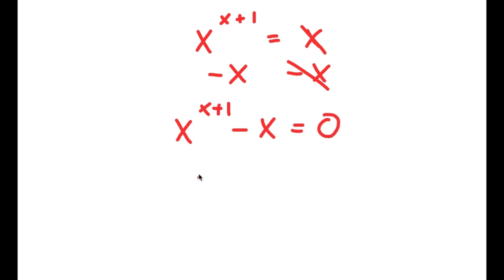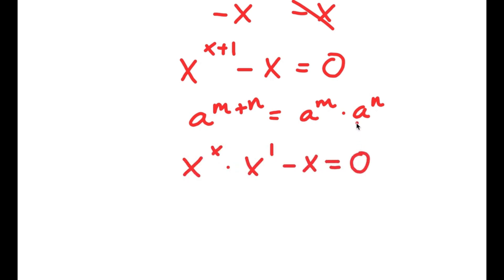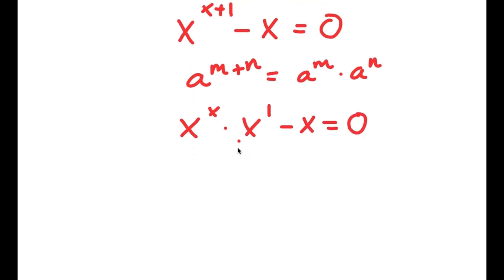If I have something in the form a to the power of m plus n, this is equal to a to the power of m times a to the power of n. So x to the power of x plus 1 is going to equal x to the power of x times x to the power of 1. Now I have this minus x is equal to 0. If I factor out x, I get x times x to the power of x minus 1 equals 0.